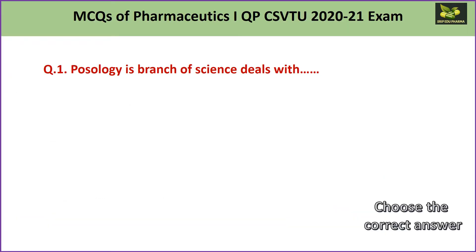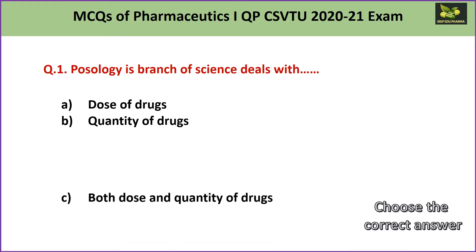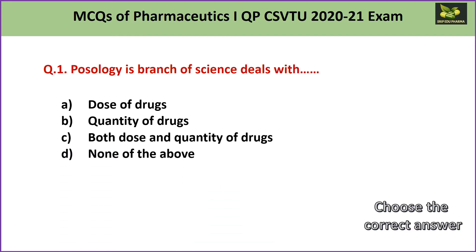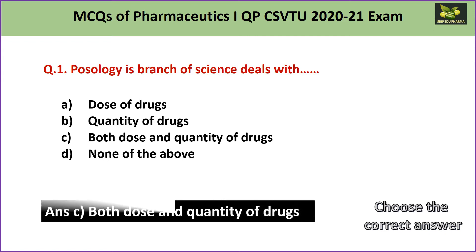Question number 1: Osology is a branch of science which deals with A. dose of drugs, B. quantity of drugs, C. both dose and quantity of drugs, and D. none of the above. If you remember the definition of Osology, it is derived from two words: 'Osos' meaning 'how much' and 'logos' meaning 'science.' The definition states Osology is a branch of medical science which deals with dose or quantity of drugs administered to a patient to get the desired pharmacological action. Since both terms appear, the answer is C — both dose and quantity of drugs.